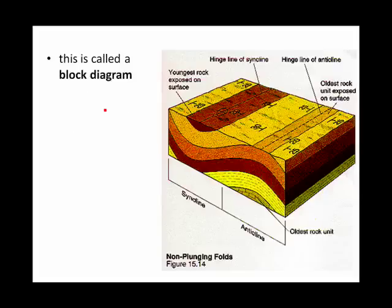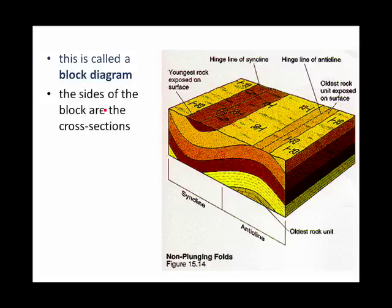Here we have what's known as a block diagram because it looks like a block. The sides of the block diagrams are cross sections. So this cross section here shows us that we have a clear syncline and an anticline. The other side here doesn't show that it's a syncline and an anticline. So not all cross sections will give you the exact same information.